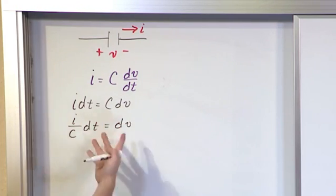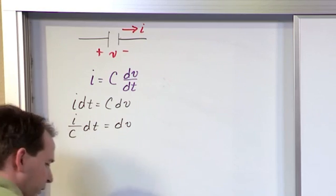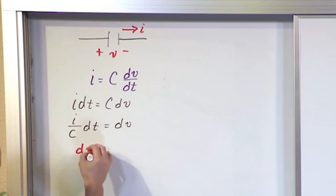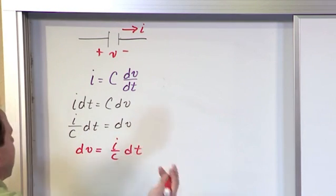Now let's flip around the equal sign because I'm solving for v so I want it on the left hand side. Let me switch colors. So basically dv is equal to i over C times dt. Now what do you think we do next?